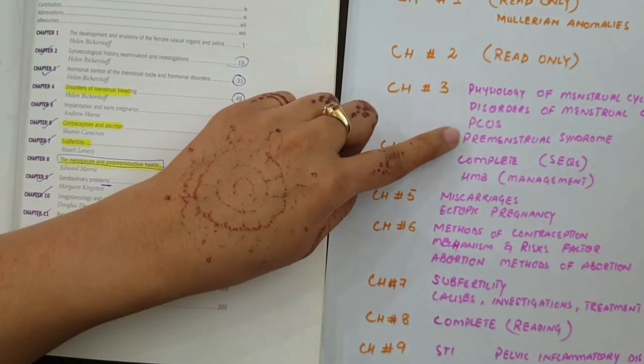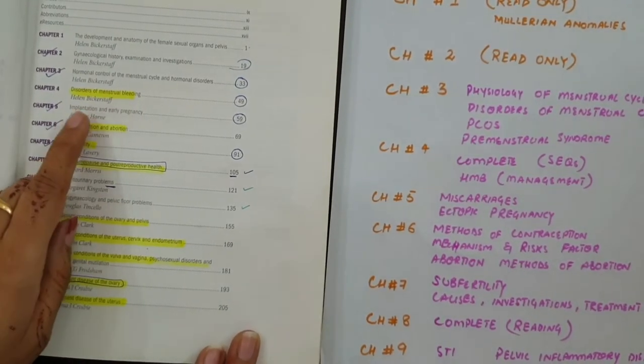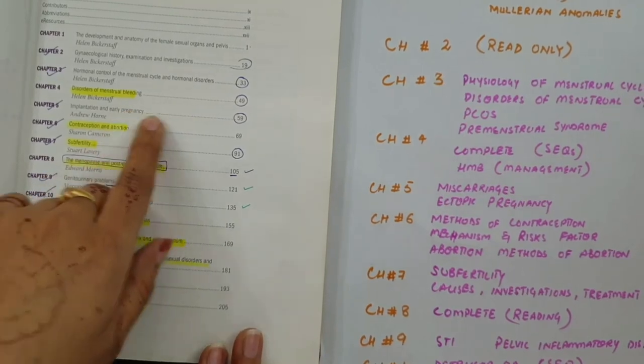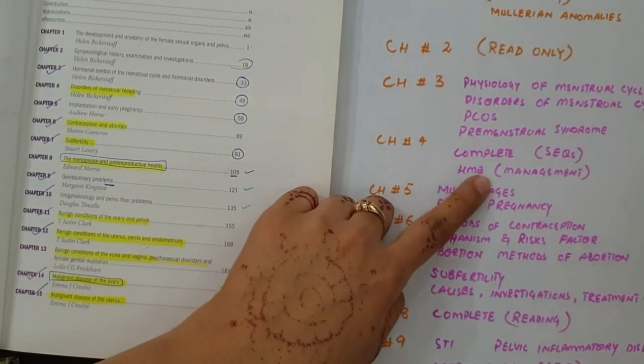The fourth chapter is Disorders of Menstrual Bleeding. This complete chapter is important. This is why it comes from heavy menstrual bleeding and management.